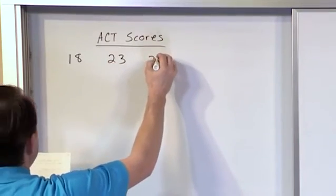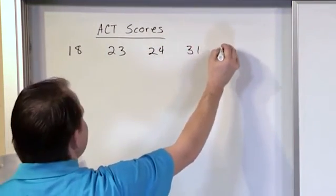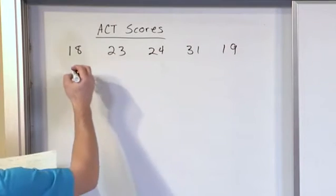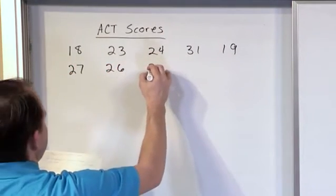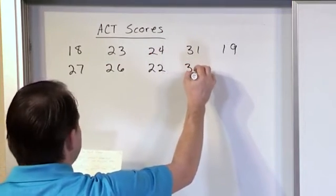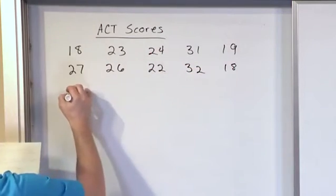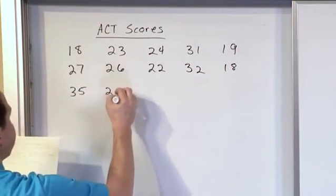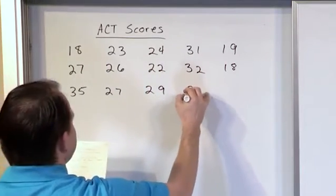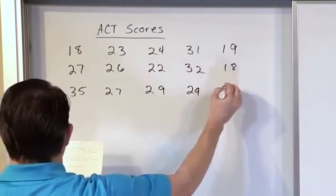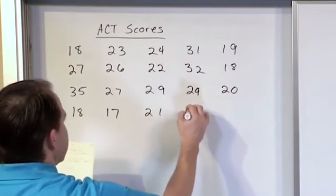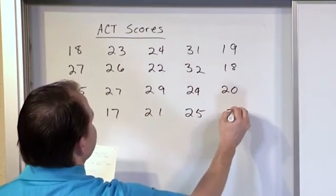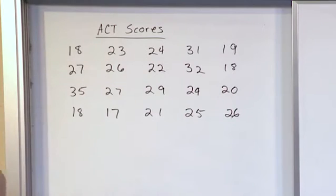18, 23, 24, 31, 19, these are their ACT scores. And I have a bunch of data here. 27, 26, 22, 32, and 18. Here I have 35, 27, 29, 24, 20. Here I have 18, 17, 21, 25, and 26. Let's say we have those, and I want to create a stem and leaf diagram.